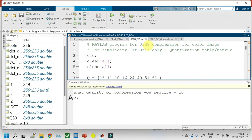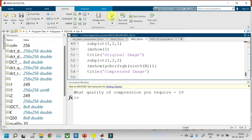This shows the MATLAB program for JPEG compression for color image and for simplicity it only uses one quantization table both for luminance and chrominance. Let us run and see the output.